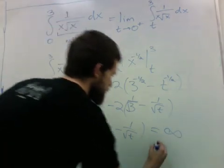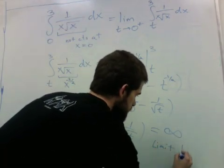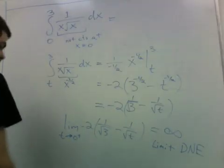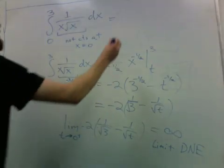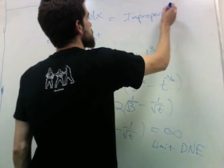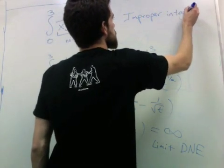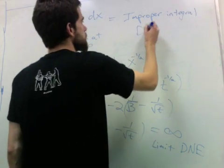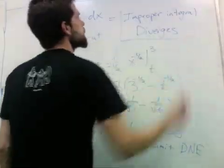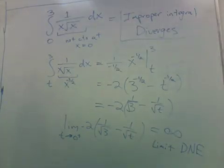So the limit does not exist. The original improper integral diverges and we can't make sense of any value of it.